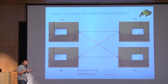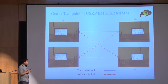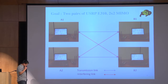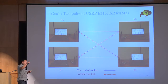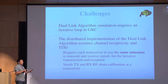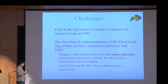We build a system with two pairs of USRPs, each of them with direct links and cross interference between each other. We want to see with this demo system whether our algorithm works and whether we can get convergence. That leads to the challenges from this algorithm.